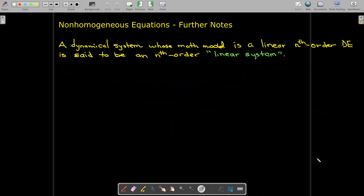So some further notes about non-homogeneous systems. We could have a dynamical system whose model is a linear nth order differential equation. We can refer to that as an nth order linear system.